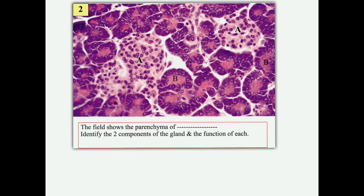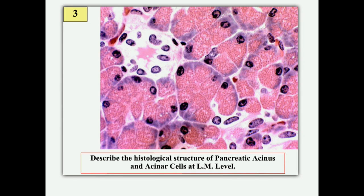The two components of the pancreas are: the exocrine component, represented by the pancreatic acini secreting pancreatic juice containing different digestive enzymes like amylase and lipase; and the endocrine component, the islets of Langerhans, secreting hormones like insulin and glucagon. To describe the histological structure of the pancreatic acinus: the acinus is small in diameter with a narrow lumen. The acinar cells are pyramidal with ill-defined boundaries, apical acidophilic zymogen granules, a basal rounded nucleus, and basal basophilic cytoplasm.